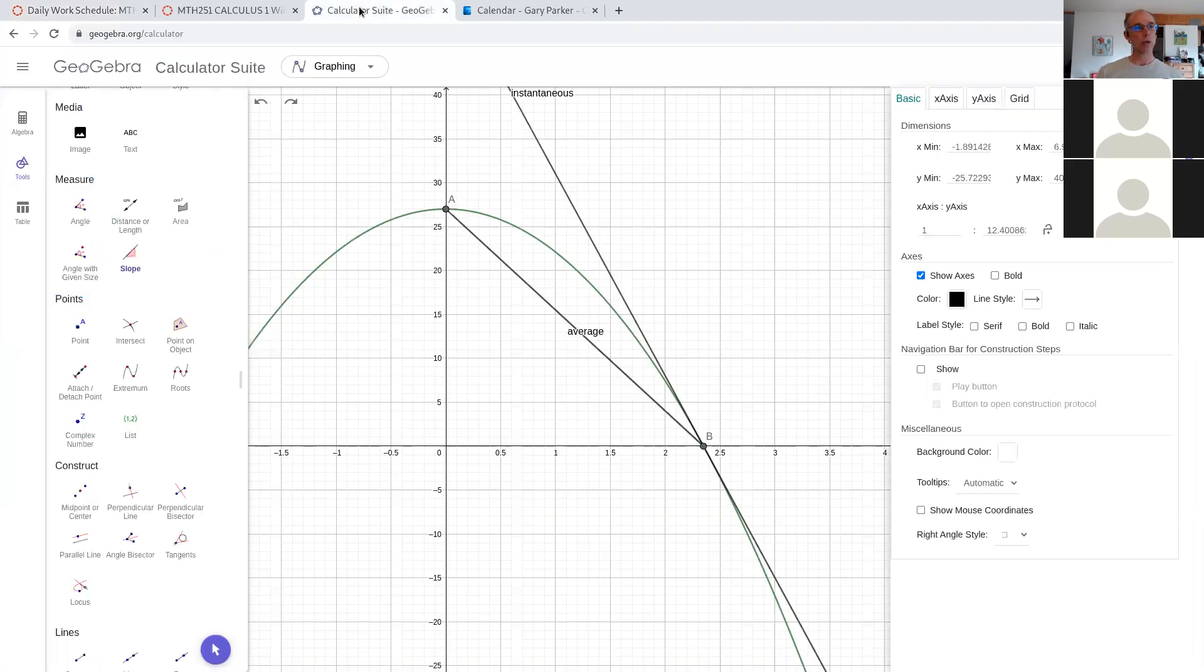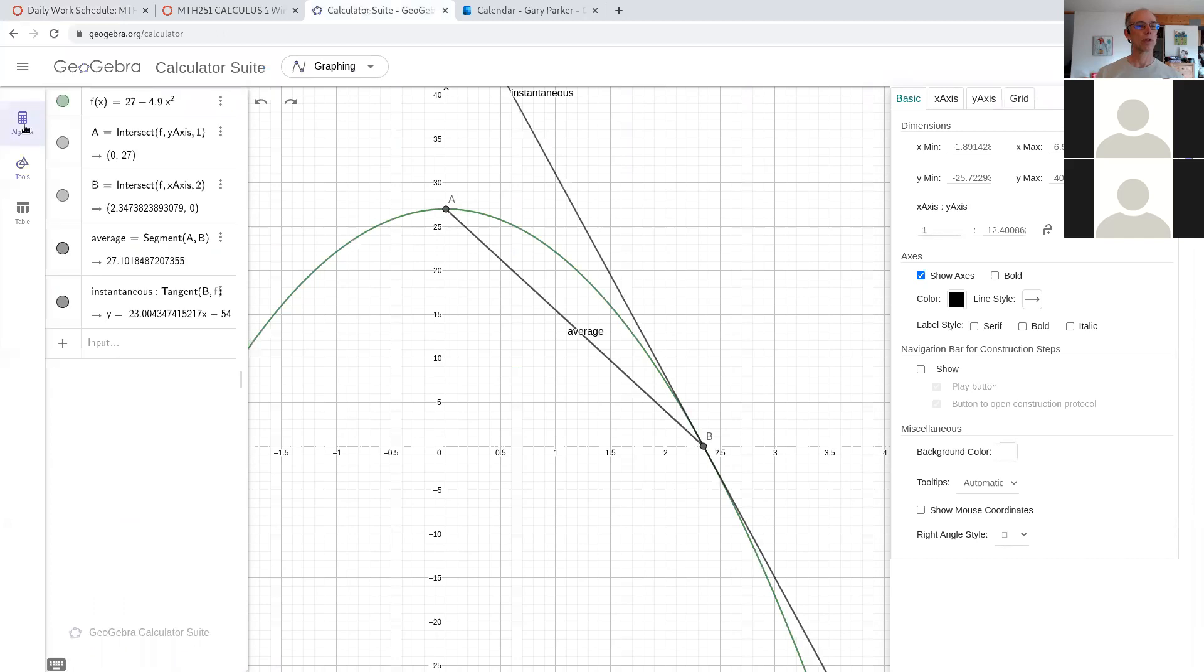The green one, let's turn off a couple of others here, is my function. Y equals negative 4.9x squared plus 27. And the physical reality of this particular equation for me is only between point A and point B because down here is the ground and my ball is not going to pass through the ground. And before point A was before I dropped the ball and the ball was in my hand before I dropped it. So that's irrelevant too.